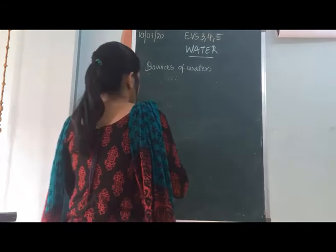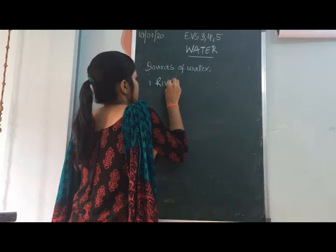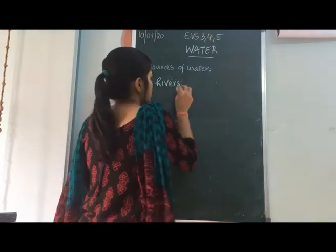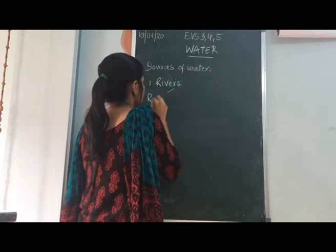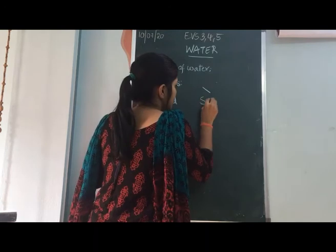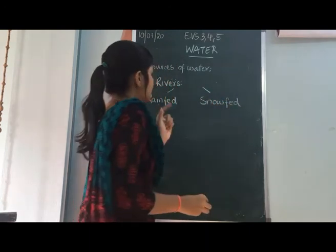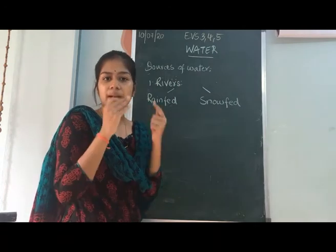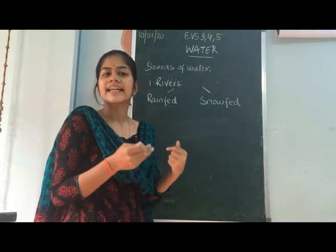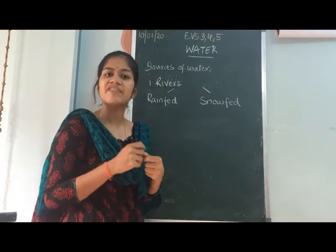Another source of water is rivers. Rivers are of two types: rain-fed rivers and snow-fed rivers. Rain-fed rivers means when rain falls from the surface, it gets collected in these rivers. These rivers are seen only in the rainy season because in summer they dry up.